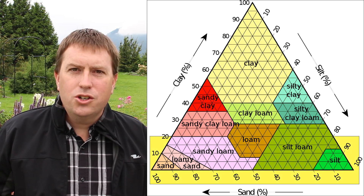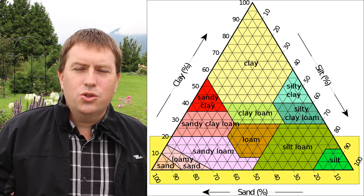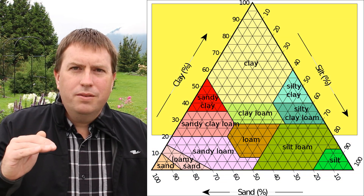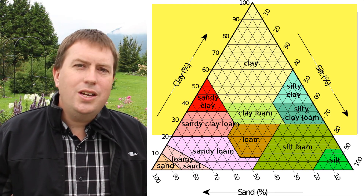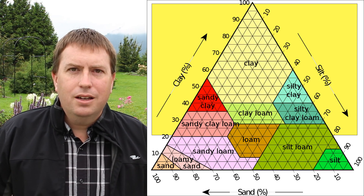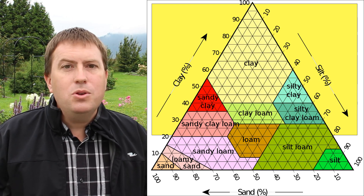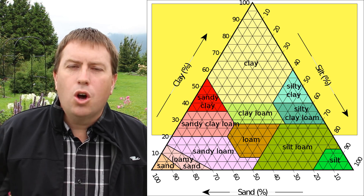Soil scientists put together a soil texture pyramid, or triangle, to show how that works. I'm going to put up a copy on the screen here. At the very bottom end of the pyramid you have your sandiest and loamiest soils, but at the top portion it's talking about your clay soils. Anything down to about 20 percent clay content in your soil has the heavy or sticky characteristics of clay, and by the time you get to 30 or 40 percent, it's completely dominated by clay characteristics.